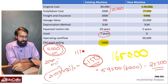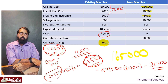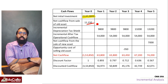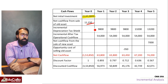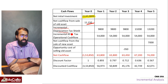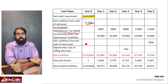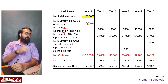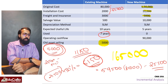Incremental depreciation tax shield - very important. Incremental depreciation tax shield: extra tax shield. The new machine depreciation is calculated, and the old machine depreciation is subtracted to get the extra depreciation. This gives us the incremental depreciation tax shield.